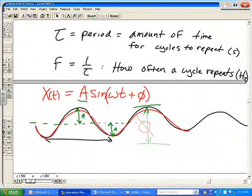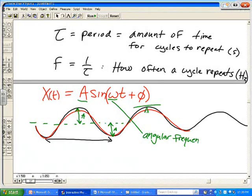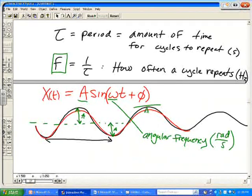So, the omega term here, that is angular frequency. Now, not to be confused with this frequency, angular frequency is measured in radians per second. So, in other words, how much of our entire cycle have we done per unit time? And if you make it all the way around, if you're using radians instead of degrees, if you make it one cycle, that's two pi radians.